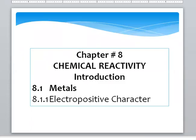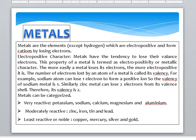Chemical reactivity, chapter number eight. Today we are going to do the introduction about metals and electropositive character. Metals are the elements, except hydrogen, which are electropositive and form cations by losing electrons.